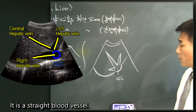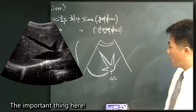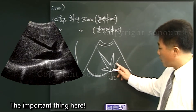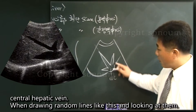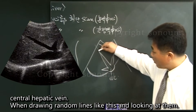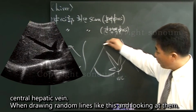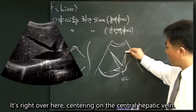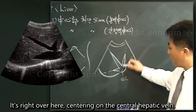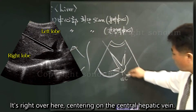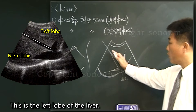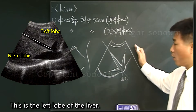It is a straight blood vessel. The central hepatic vein — when drawing lines like this and looking at them — is right here, centering on the central hepatic vein. Here is the right lobe of the liver, and this is the left lobe of the liver.